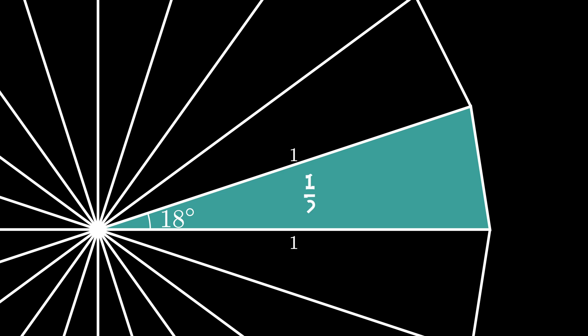From the side angle side area formula for a triangle, we conclude that this triangle has an area of 1 half times 1 times 1 times the sine of 18 degrees. Using the fact that the sine of 18 degrees is 1 over 2 times the golden ratio, we conclude that the area of one of these triangles is 1 over 4 times the golden ratio.